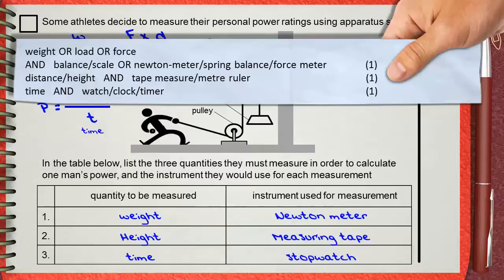Saying distance or height, you can say tape measure or meter rule. This is the second mark. For the third mark you can say time using watch, clock, or timer. These are the three marks of the question.